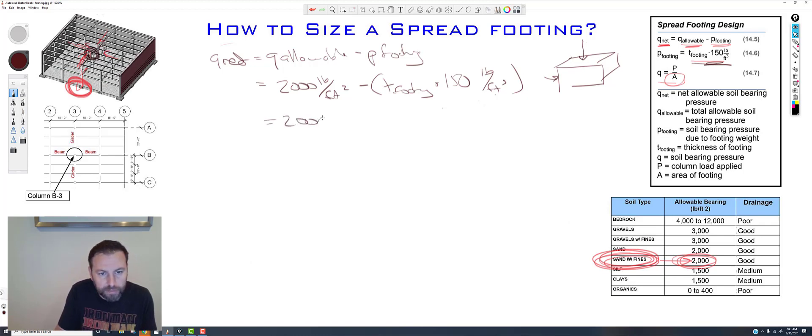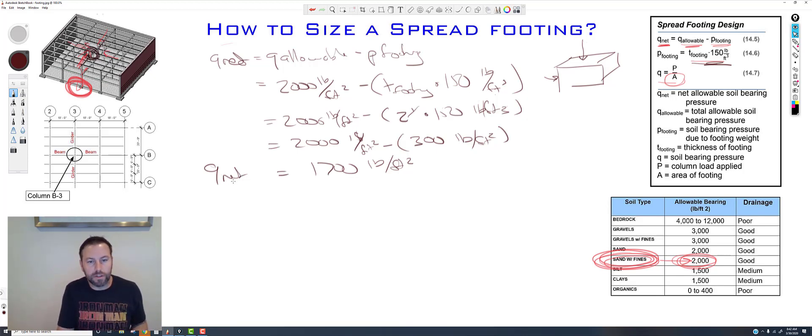So we are, for this, foot squared minus, we're going to say our footing is just 2 feet thick. We're just going to give it a number. So minus the 2 feet times 150 pounds per foot cubed. So 2,000 pounds per foot squared minus 2 times this 150 is 300 pounds. The 2 times 150, 300 pounds per feet squared, right? Because the foot here crosses off with one of those. So 2,000 minus 300, so we have 1,700 pounds per foot squared is our Q net.